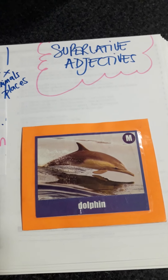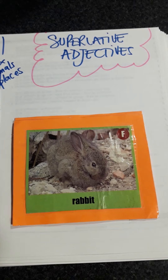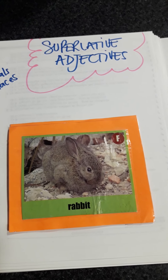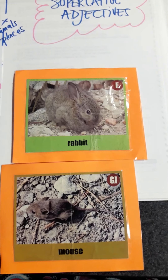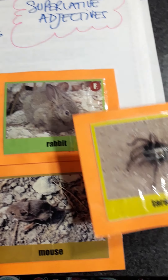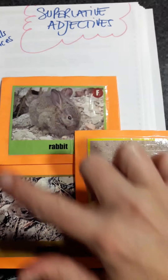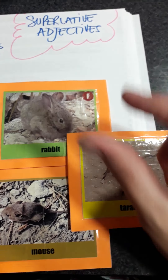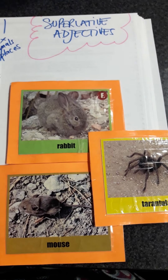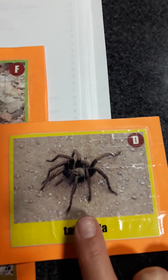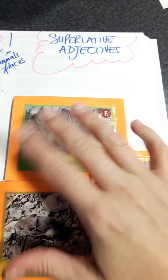Now, imagine that we have again a rabbit, a mouse, and a tarantula. We have to compare the three of them using 'small'. We have to say that the tarantula is the smallest of the three.